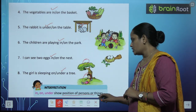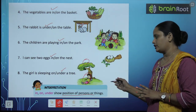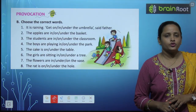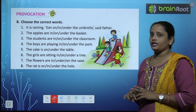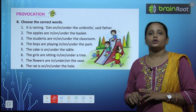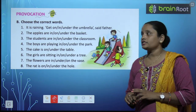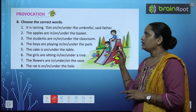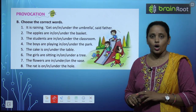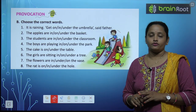Ye kisi bhi person ki ya phir thing ki position batate hain. Now children, let's move on to B exercise. Choose the correct word. It is raining. Get in, on, or under the umbrella, said father.